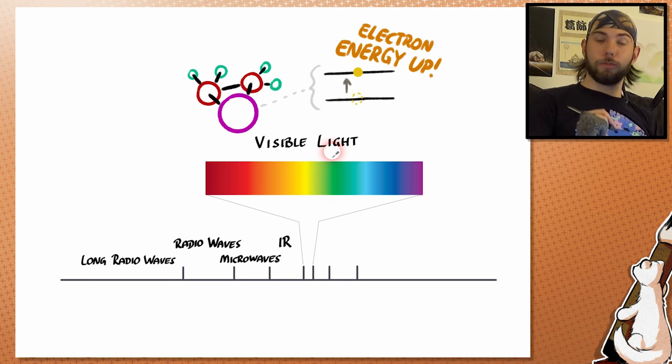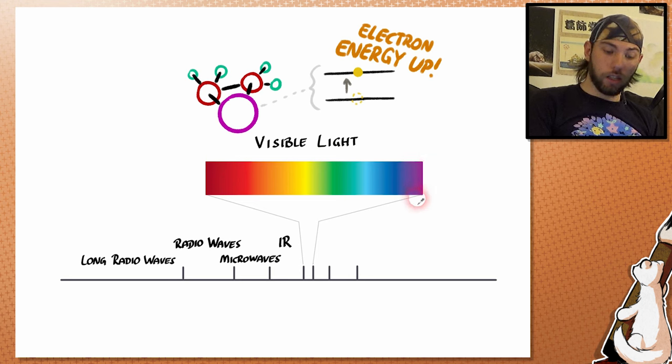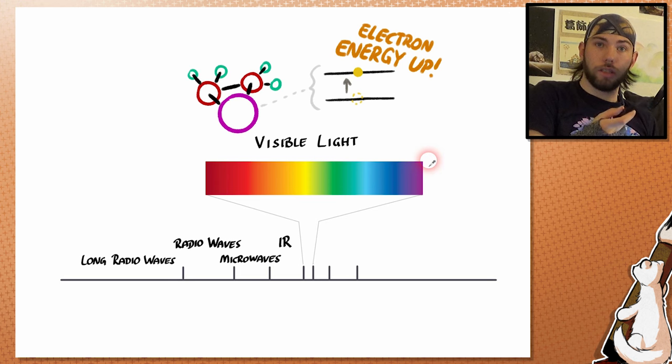Now we get to the most interesting part, the visible light. Starting with the lowest energy, that is red, and ending at the highest energy, which is purple. And visible light does not do that much with normal matter, with normal molecules, other than causing a little bit heat.